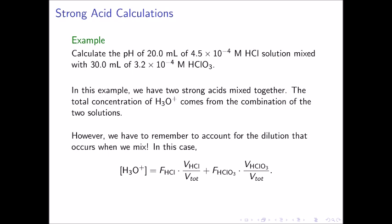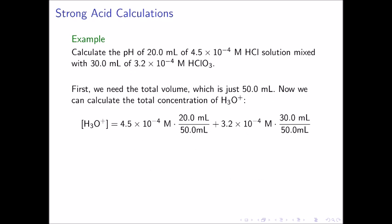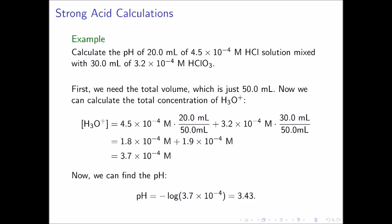The total concentration of hydronium ion is equal to the formal concentration of HCl times the dilution factor of the volume of HCl initially over the total volume, added to the formal concentration of the chloric acid times the volume of the chloric acid initially divided by the total volume. The total volume is 20.0 plus 30.0 milliliters, or 50 milliliters. This gives 4.5×10⁻⁴ times 20.0/50.0, plus 3.2×10⁻⁴ times 30.0/50.0, equaling 1.8×10⁻⁴ plus 1.9×10⁻⁴, for a sum of 3.7×10⁻⁴ molar. The pH is the negative log of 3.7×10⁻⁴, or 3.43.